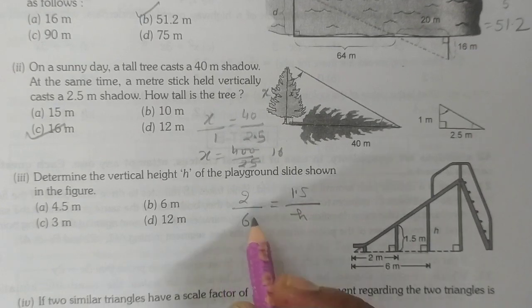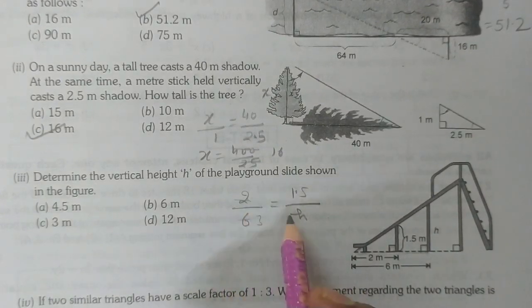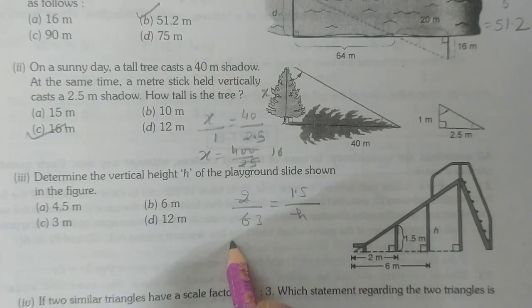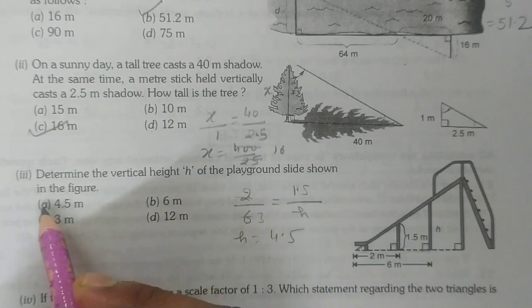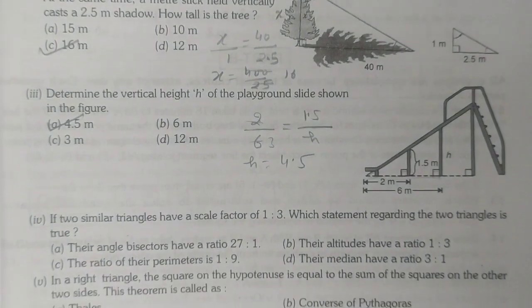Cross multiply and find out. After cutting, h equals 1.5 times 3, which is 4.5. So this is the correct answer.